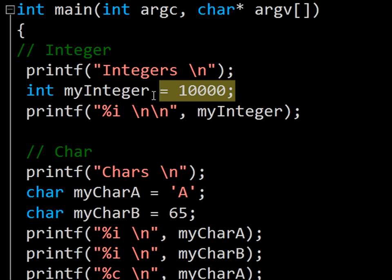That aside, these two lines declare an integer, set the value to ten thousand, and then print it.